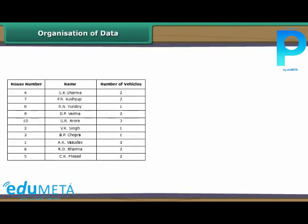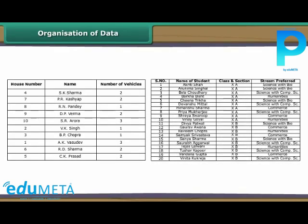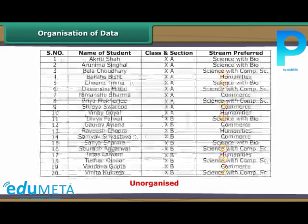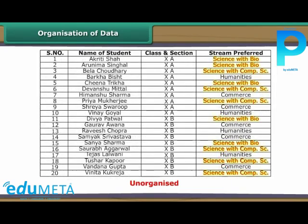Organization of data. The data collected by the RWA and the data provided by Sheetal to the academic in charge are unorganized. The former does not tell the RWA at one glance the number of residents who own more than one vehicle. Similarly, the latter does not tell the academic in charge at one glance the number of students who have opted for science.